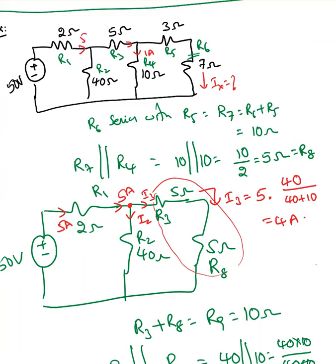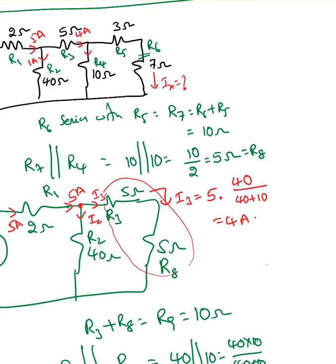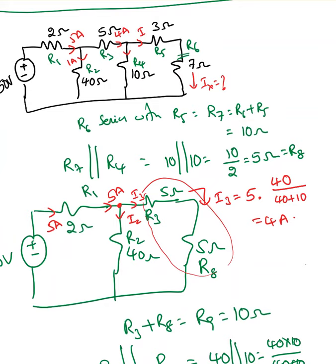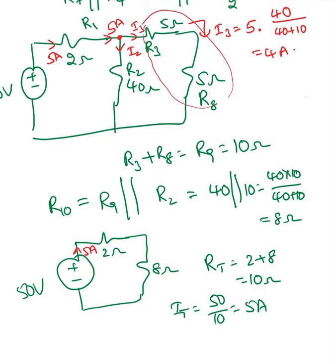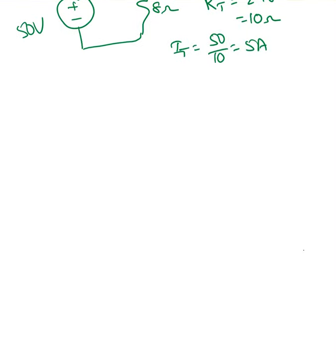Out of 5 amperes, 1 ampere goes one way and 4 amperes goes the other. Now applying the current division rule again to find I6: the current entering is 4 amperes and it splits through R4, with R5 and R6 in series forming the other branch. I6 = 4 × (10 / 20) = 2 amperes. So Ix = 2 amperes. That's how we solve this ladder circuit.